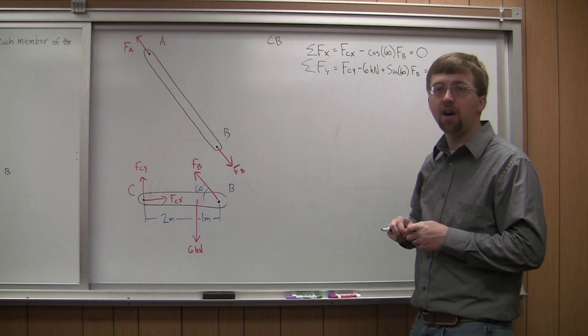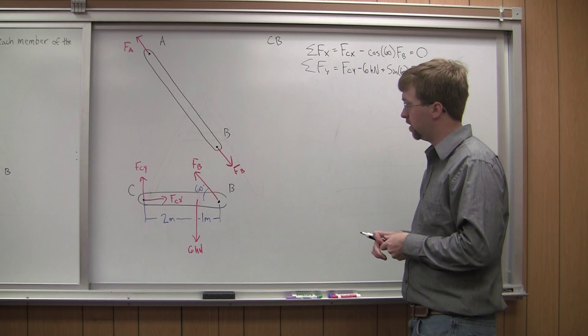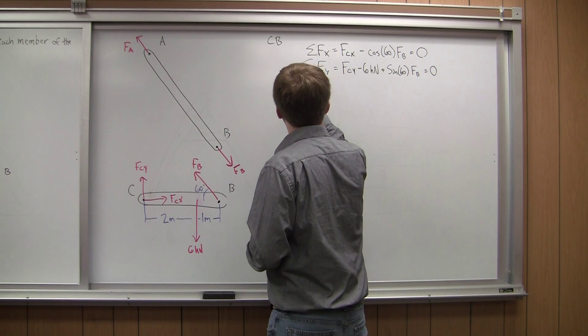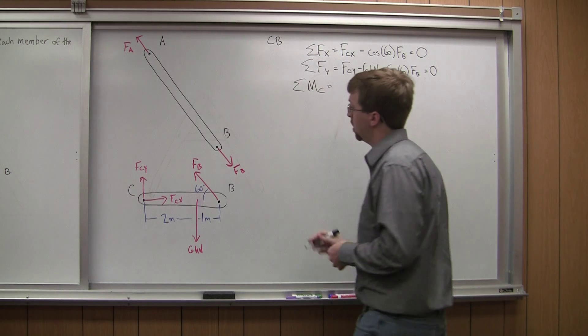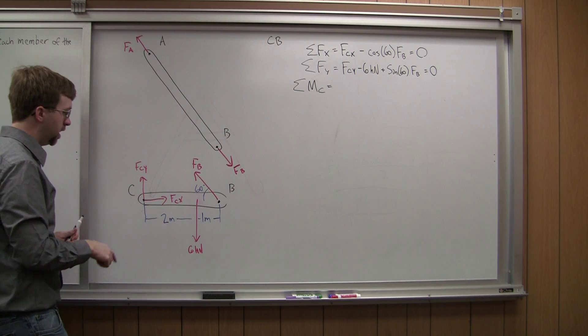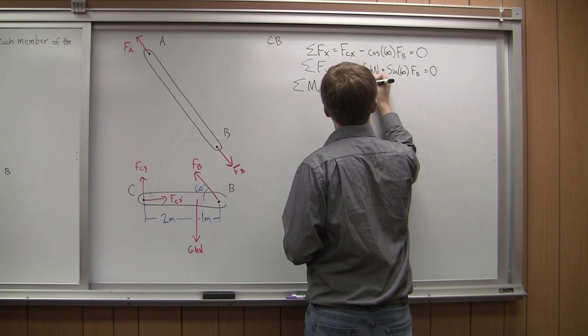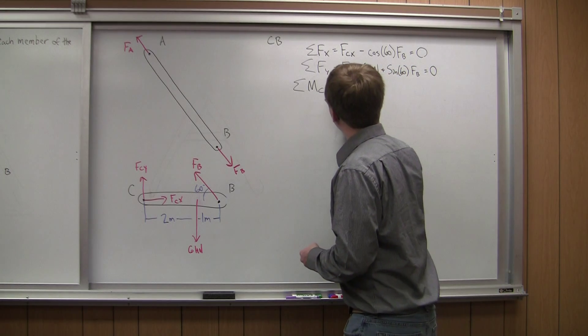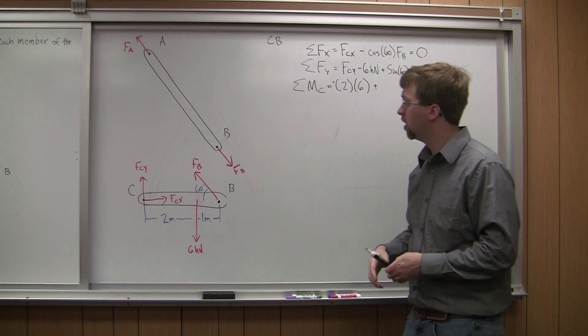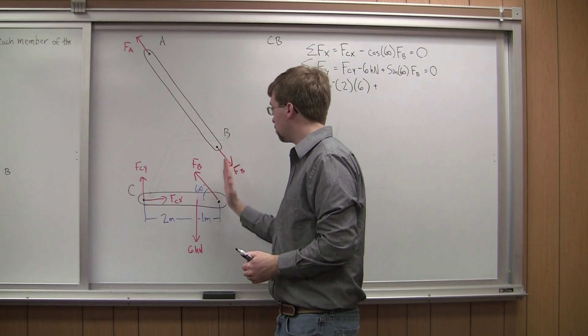And then finally, I'm going to have my moments. So I'm going to take the moment about point C over here and that lets me figure out the unknown force FB. So sum of moments about point C is going to be equal to, I've got the 6 kilonewtons force, so it's going to be a negative moment. It would cause a clockwise rotation. So 6 kilonewtons times 2 meters. And again, that's negative. And I've got a positive moment from FB over here. And so the way I'm going to do this, I'm going to think about breaking this down into components.